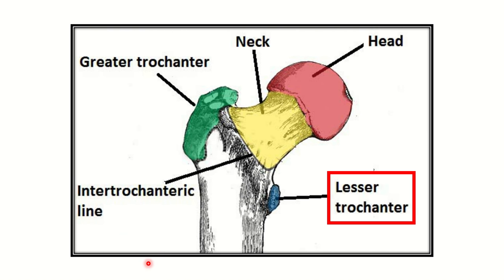Here we can see the proximal part of the femur — the head of the femur, the neck of the femur, the intertrochanteric line in the anterior part, the intertrochanteric crest in the posterior part, the greater trochanter, and the lesser trochanter. The question states that avulsion of the lesser trochanter has occurred.